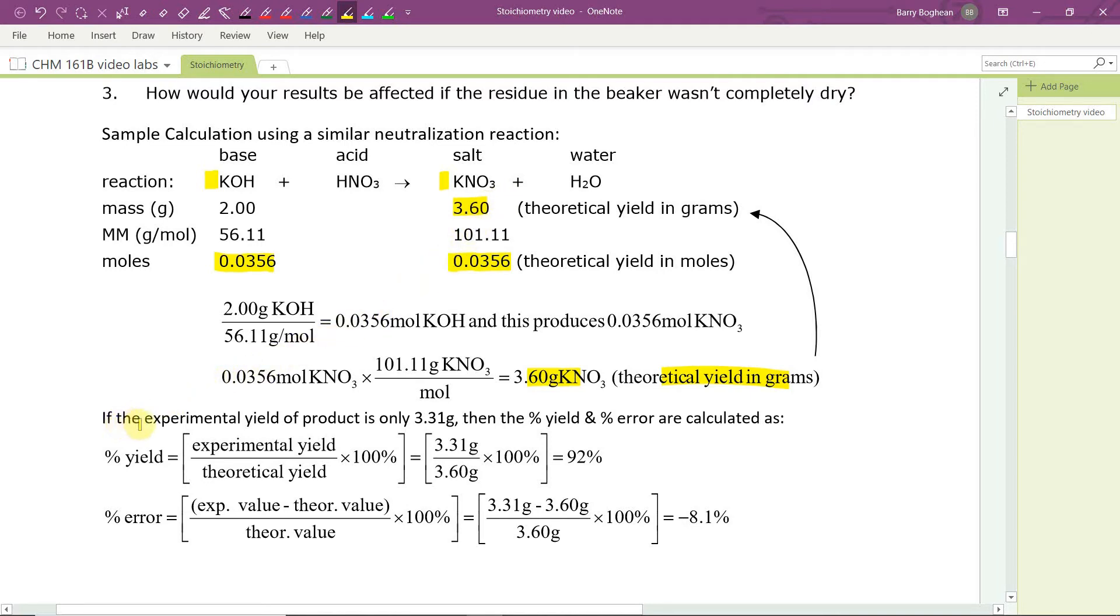In this case, the experimental yield of the product, the actual yield, is 3.31 grams. And from this, calculate the percentage yield and the percentage error.